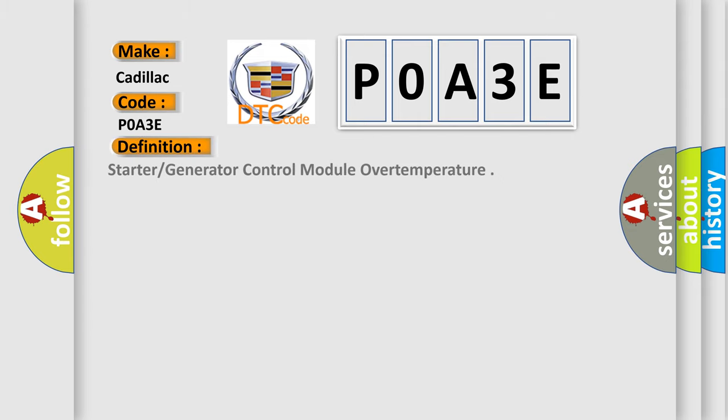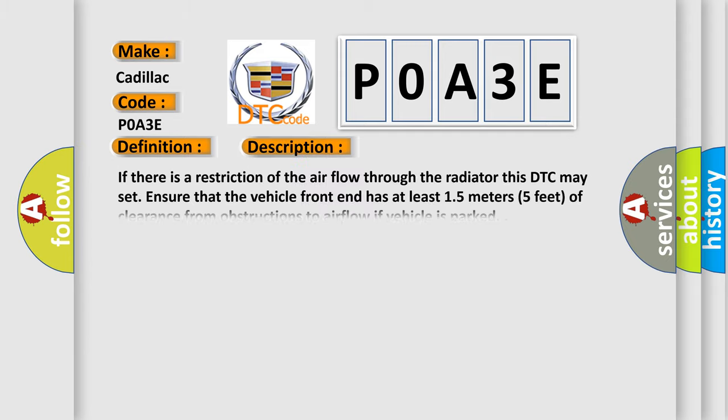The basic definition is: Starter or Generator Control Module Over Temperature. And now this is a short description of this DTC code.